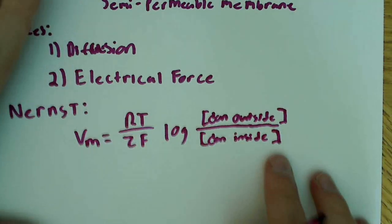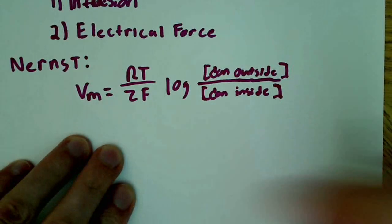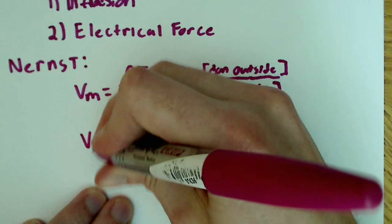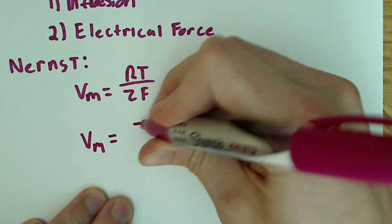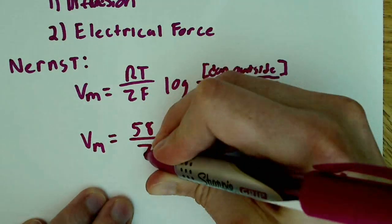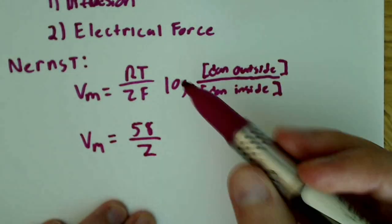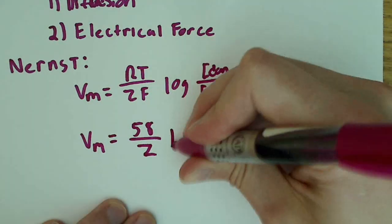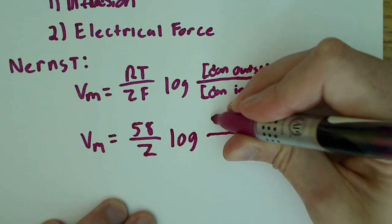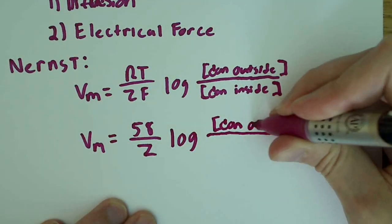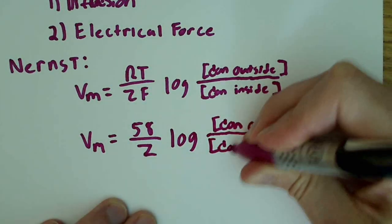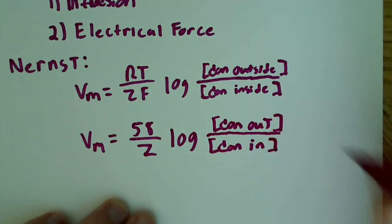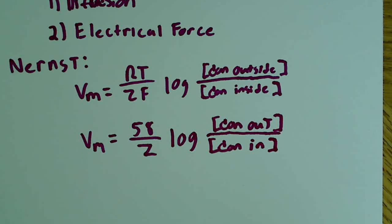Now, there is a simpler way to represent it that is more common and that will be a lot easier for you guys to use practically. Because if you remember the equation in this manner, it will be easier to use on exams. So 58 over Z, so basically what I'm saying here is that RT divided by F simplifies to 58. And then it's just the log of the concentration out over the concentration in. That's a simplified version of it.